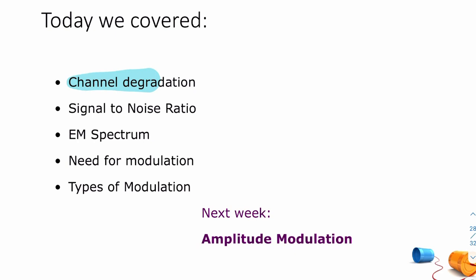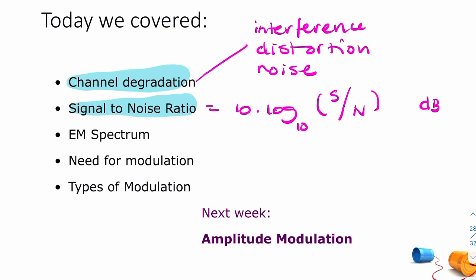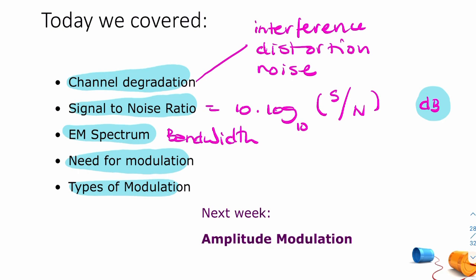What have we covered today? We spoke about channel degradation — interference, distortion, and noise. We spoke about signal-to-noise ratio, equal to 10 times log base 10 of signal power divided by noise power, in decibels. We reminded you of the electromagnetic spectrum and where baseband and bandpass signals live. We spoke about channel bandwidth, signal bandwidth, baseband bandwidth, and bandpass bandwidth. We spoke about why modulation is important, and briefly mentioned different types of modulation — the first being amplitude modulation, which we'll look at next week.